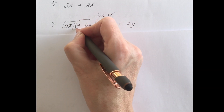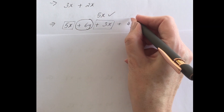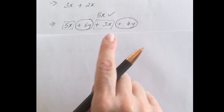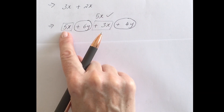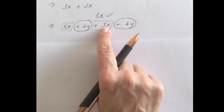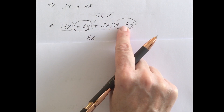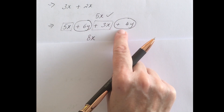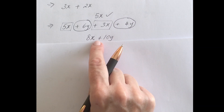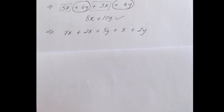I'm going to circle the y terms, again including the sign to the left. The y terms can then be added together separately. Your final answer: 5x and 3x together give you 8x; 6y and 4y, both positive, give you positive 10y. So we put a plus between the two, and the final answer is 8x + 10y.